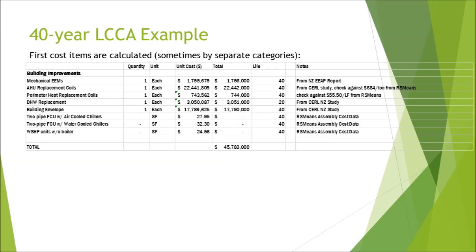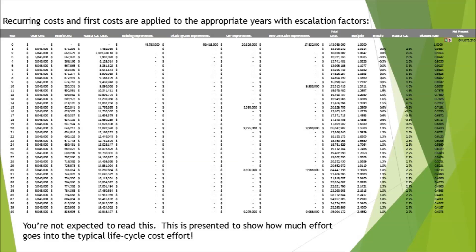All costs — annual and one-time — go into a large spreadsheet with years running from zero to 40. Building improvements are first costs in year zero, and annually recurring costs appear as items come due for replacement in out years. Utility costs, electric costs, natural gas costs, and O&M costs all total up to give a total cost per year as a cash flow. At the end, we roll it up to get a net present cost for each alternative being considered.